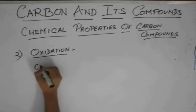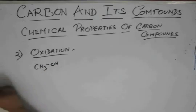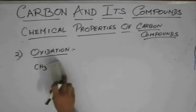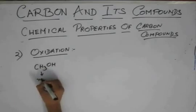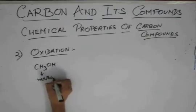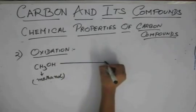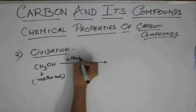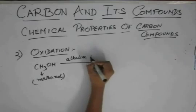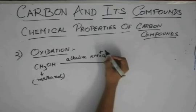So, we have this compound, CH3OH. Let me not draw this bond. CH3OH. This is methanol. This, if you treat with alkaline KMnO4, this is potassium permanganate.